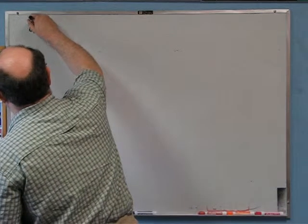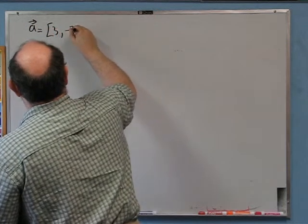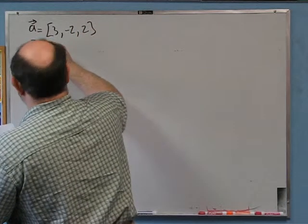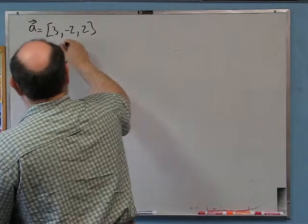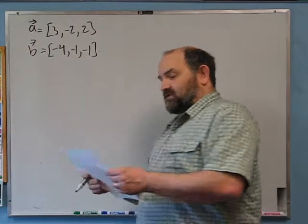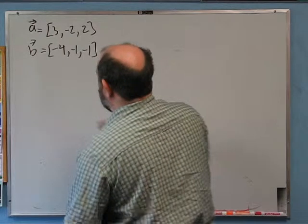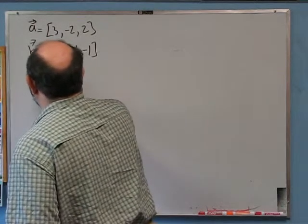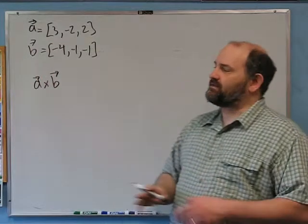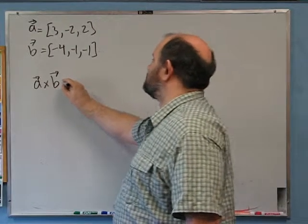In this problem I have two vectors. I have A, which is (3, -2, +2), and B, which is (-4, -1, -1). The problem says: calculate the cross product of vectors A and B. Technically that isn't enough information because A cross B and B cross A are not the same. Let's go with A cross B — the first one given times the second.